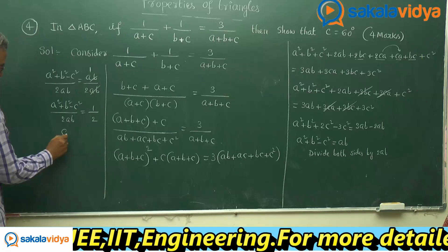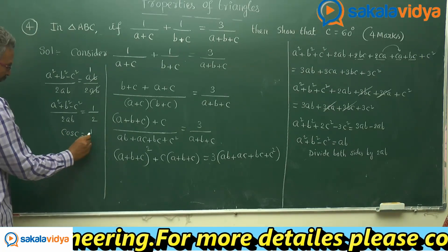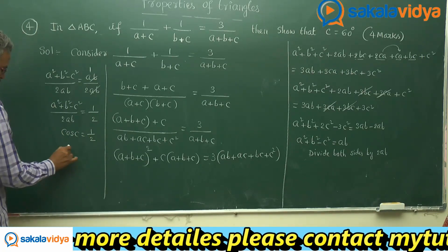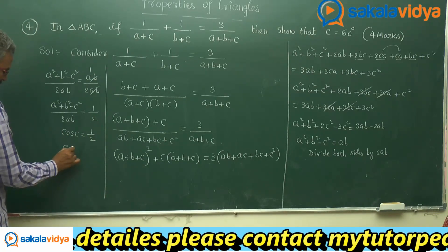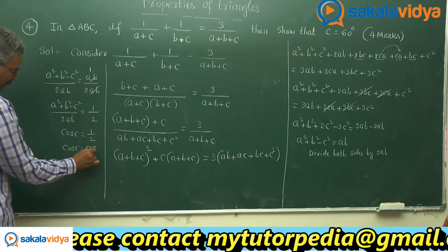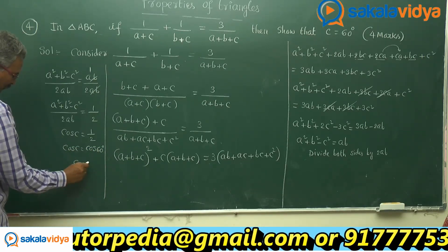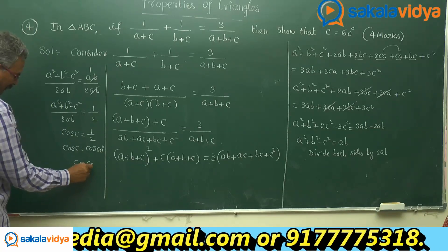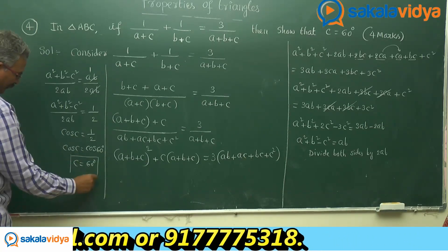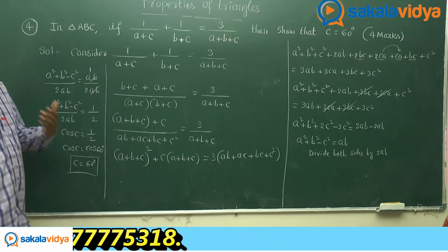This is cos C equal to 1 by 2. So cos C equals cos 60 degrees. Therefore, C is equal to 60 degrees. Hence, it is proved.